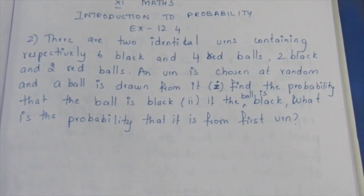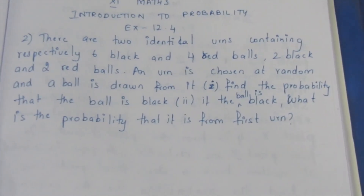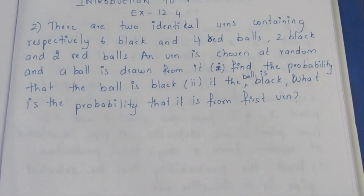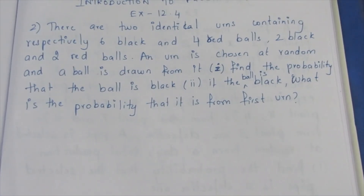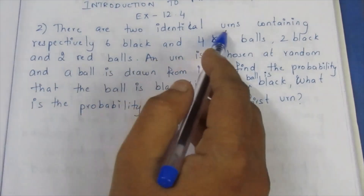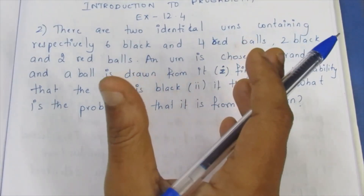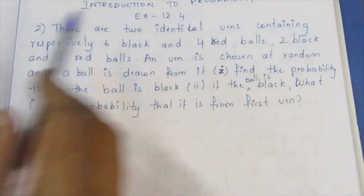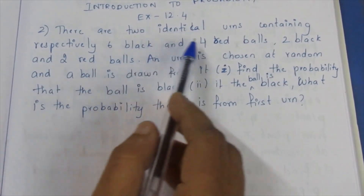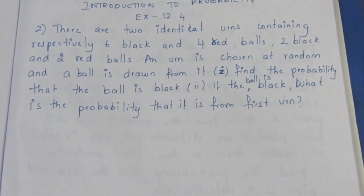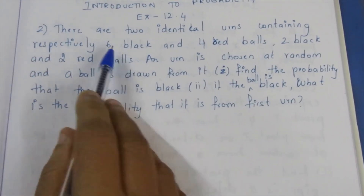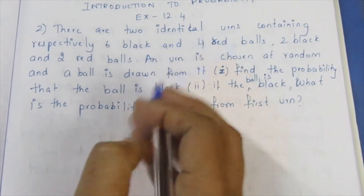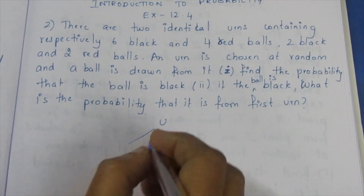Hello viewers, I am Aitli. In the Class 11 Math Introduction to Probability, Exercise 12.4, we are doing the second sum. If you look at the question, there are two identical urns containing 6 black and 4 red balls each.